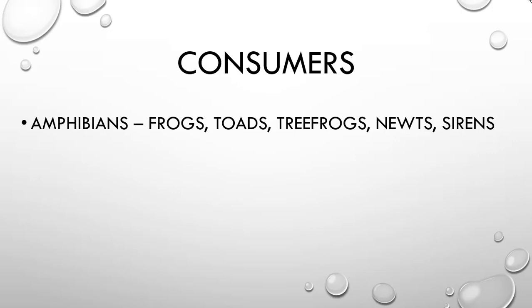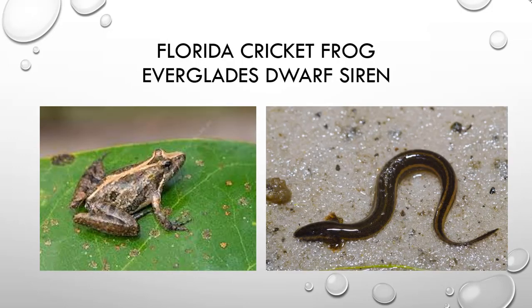Now let's talk about consumers. Amphibians include frogs, toads, tree frogs, newts, and sirens. I specifically picked pictures of the Florida cricket frog and the Everglades dwarf siren. The siren is related to a salamander, and those feathery structures behind its head that look like ears are actually external gills — they filter oxygen out of the water on the outside of its body, unlike fish whose gills are internal.